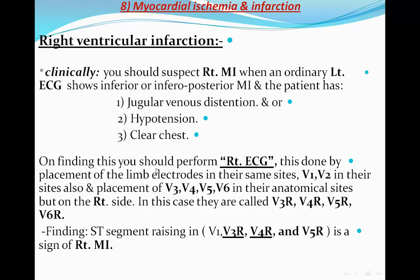When right ventricular infarction is suspected, a right-sided ECG should be performed. The limb electrodes remain in their standard positions; V1 and V2 stay in place, but from V3 to V6 the electrodes are placed at their same anatomical sites but on the right side — mid-clavicular, anterior axillary, and mid-axillary lines on the right — labeled V3R, V4R, V5R, and V6R. ST segment elevation in V1, V3R, V4R, and V5R are signs of right ventricular involvement in the STEMI.